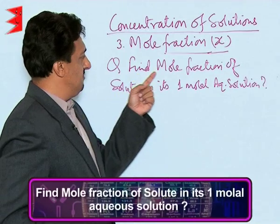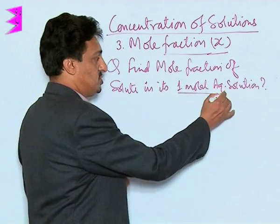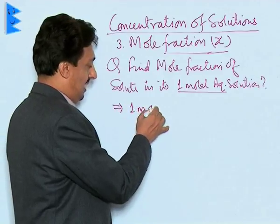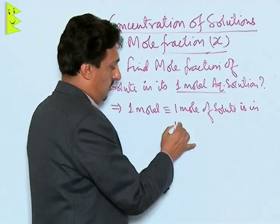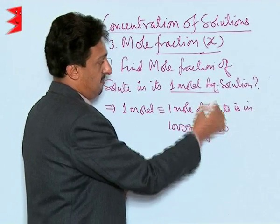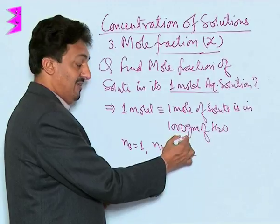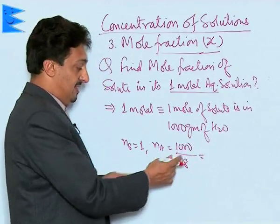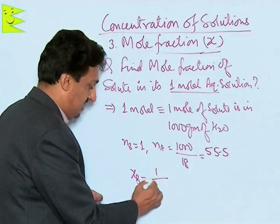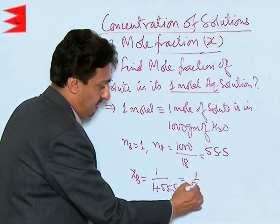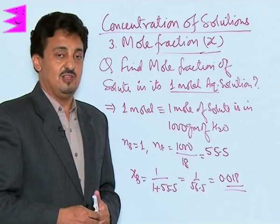Let us do a numerical: find the mole fraction of solute in a 1 molal aqueous solution. Since the solution is 1 molal, 1 mol of solute is dissolved in 1000 g of water. The number of moles of solute = 1. The number of moles of solvent = 1000 / 18 = 55.5. Therefore, the mole fraction of solute = 1 / (1 + 55.5) = 1 / 56.5 ≈ 0.018.